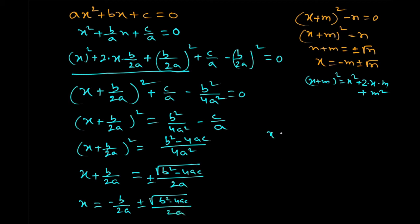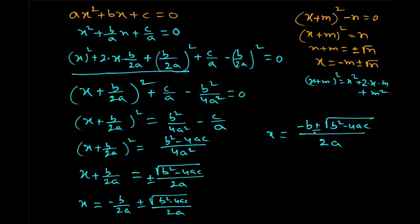Simplifying further with LCM 2a, x equals minus b plus or minus root over b squared minus 4ac, all divided by 2a. So the two roots are: minus b plus root over b squared minus 4ac divided by 2a, and minus b minus root over b squared minus 4ac divided by 2a.